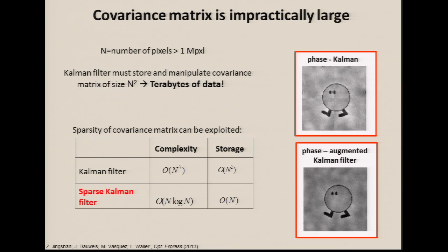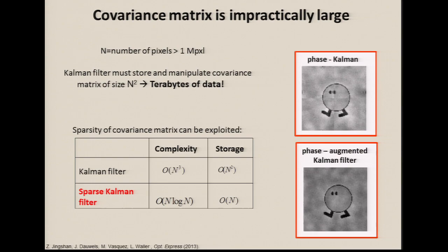Optics to the rescue. My student Jing Shan figured out a way to prove that in this case our covariance matrix must be sparse — not the object, but the covariance matrix — so we can significantly reduce the computation. We got a 10¹¹ speedup, which I think says more about how bad my original algorithm was than how good the new one is. But the key insight is that we're bringing both computation and optics together — insights from both were required — and now we can do it essentially in real time.